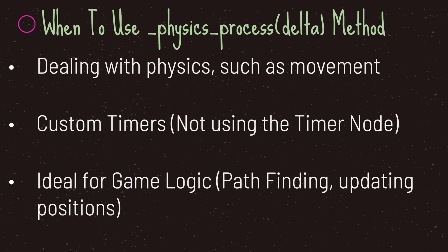When do we use the physics process virtual method? For one, when dealing with physics such as movement. It's also good for creating custom timers, because we receive the value 1 every 60th frame, making it easy to hard-code timer logic without using the timer node. Lastly, physics process is ideal for game logic such as pathfinding or updating positions — for example, giving an enemy the player's position vector.